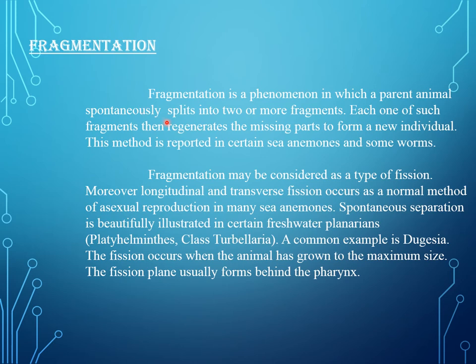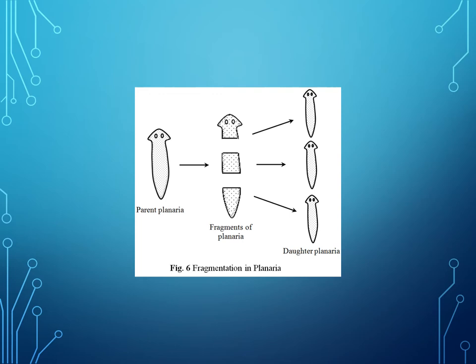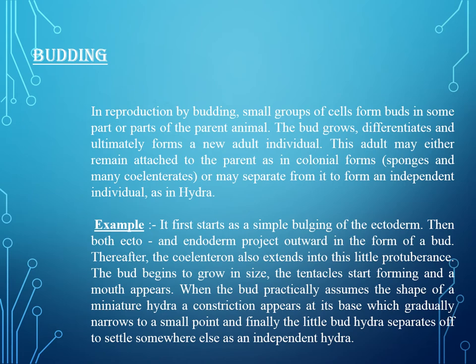Fragmentation is a phenomenon in which a parent animal spontaneously splits into two or more fragments. Each fragment then regenerates the missing parts to form a new individual. This method is reported in certain sea animals and some worms. Fragmentation may be considered a type of fission. Moreover, longitudinal and transverse fission occurs as a normal method of asexual reproduction in many sea animals. Spontaneous separation is beautifully illustrated in certain freshwater planarians (Platyhelminthes). A common example is Dugesia. Fission occurs when the animal has grown to maximum size; the fission plane usually forms behind the pharynx to form new daughter planaria. The adult may either remain attached to the parent as in colonial forms — sponges and many cnidarians.